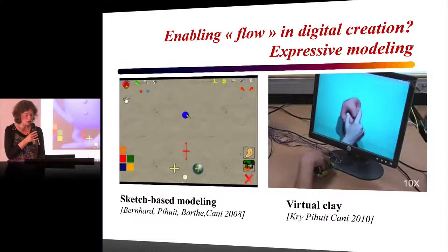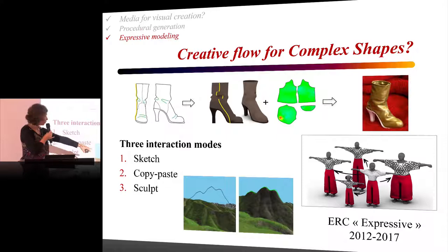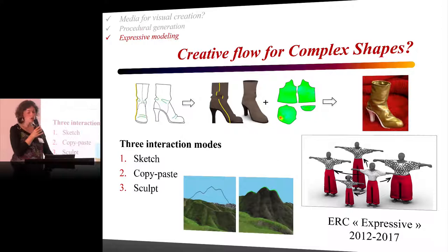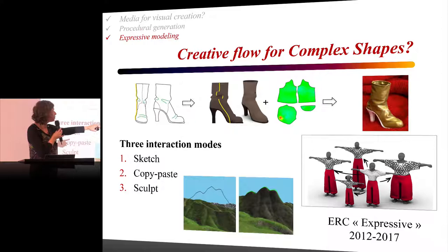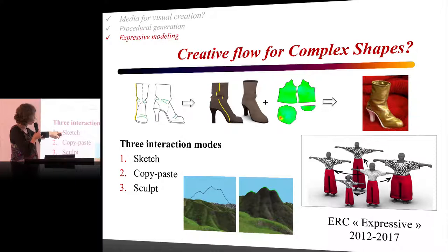The subject of my research now is: can we enable such flow for complex shapes? On the top, you have a developable surface — can we model it through sketching? Can we sculpt a mountain by drawing a silhouette that deforms it? And there is something interesting: shape transfer, or intelligent copy-paste. On the right, you see an example where we modeled clothes for a virtual character and can copy-paste this clothing to other characters, deforming automatically while staying developable and keeping the same design. I will give three more examples for three interaction modes: sketching, copy-paste transfer, and sculpting.